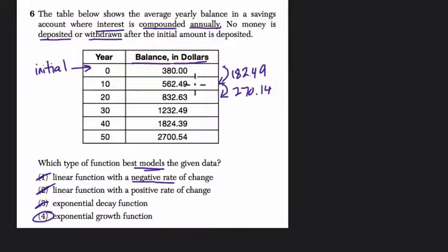In other words, if we divide the amount that we have, let's say, after 10 years, 562.49 by 380, if we divide that and find that scale factor, if that scale factor is about the same each time here, then we know it's an exponential growth function, and we can model it.